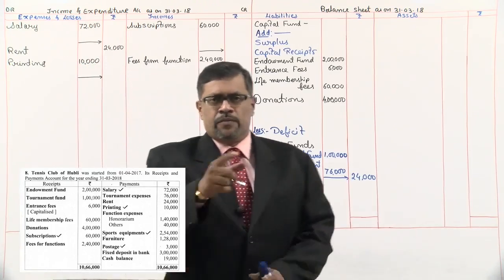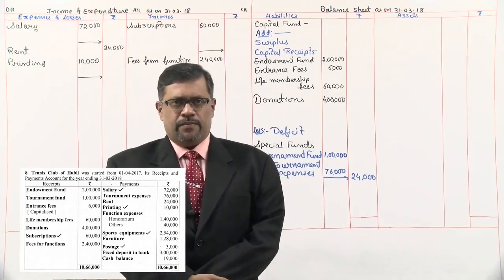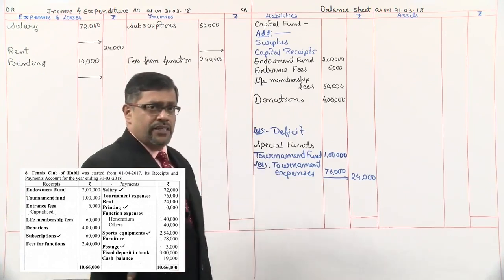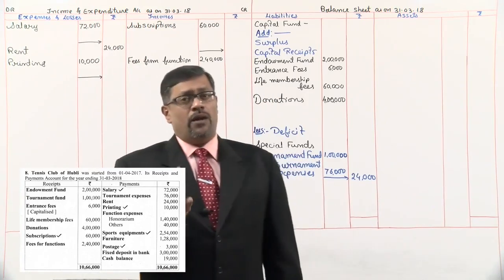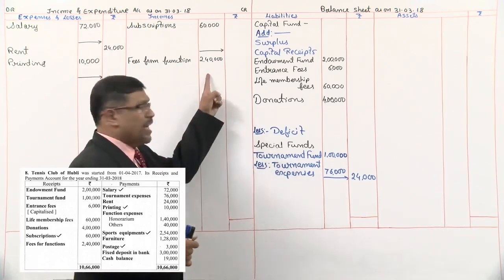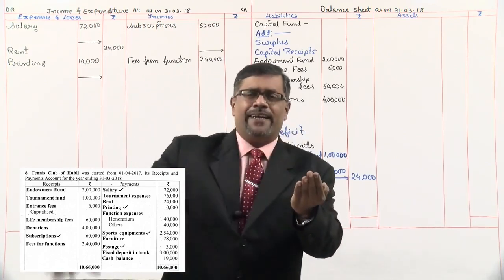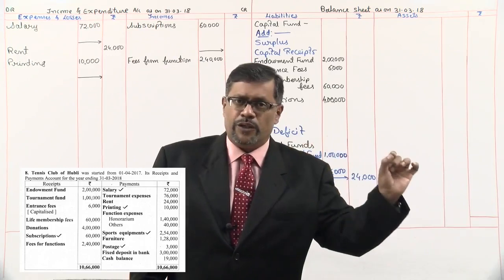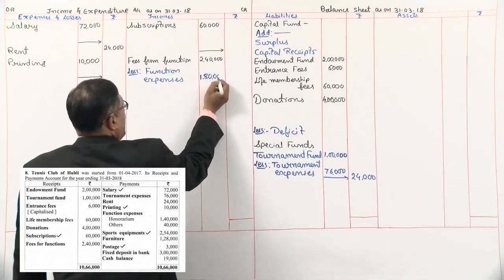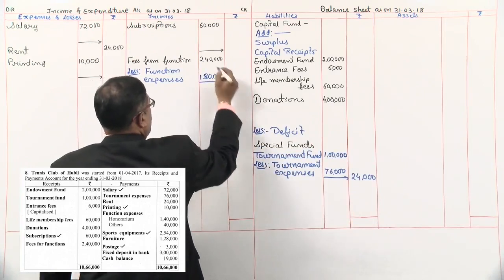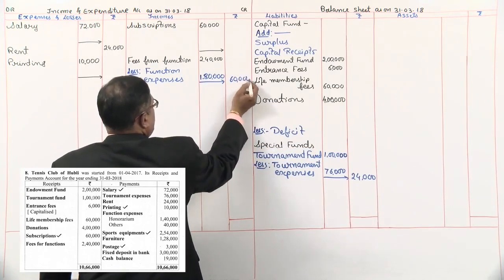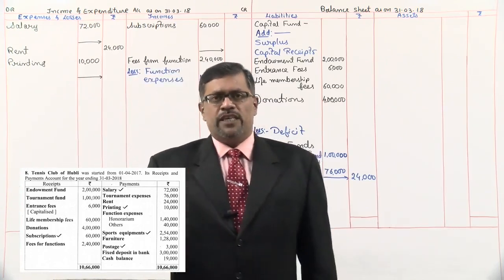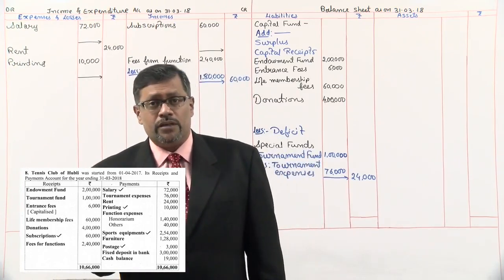Next, function expenses. We already showed fees from functions as 2 lakh 40,000. How much are the function expenses? Honorarium and others total 1 lakh 80,000. So out of the 2 lakh 40,000, the organization has spent 1 lakh 80,000. The remaining becomes their income. We minus the expenses — 1 lakh 80,000 — and the remaining 60,000 is the net fees from functions shown in the outer column.